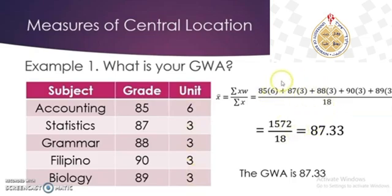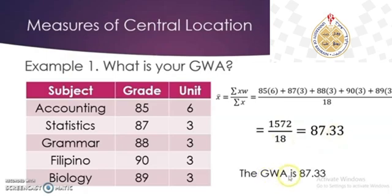The total in the numerator is 1572, divided by the denominator, which is 18, giving us 87.43. We could say that the general weighted average is 87.2.